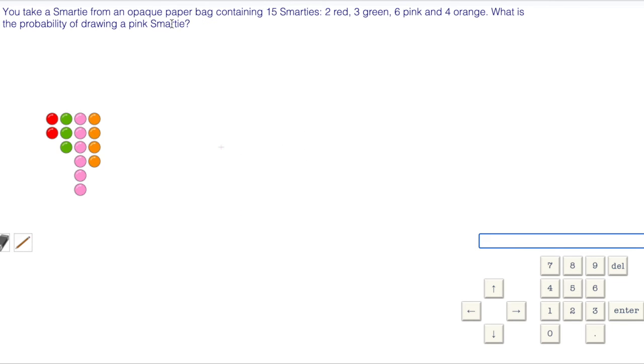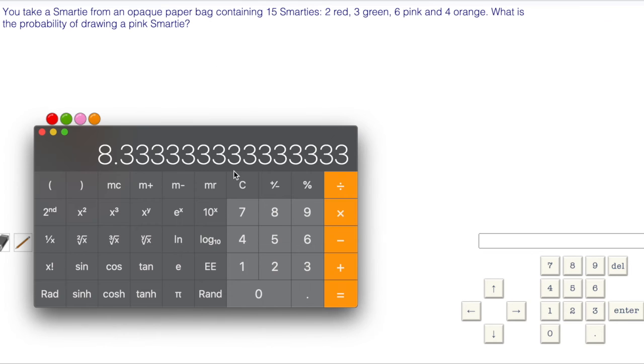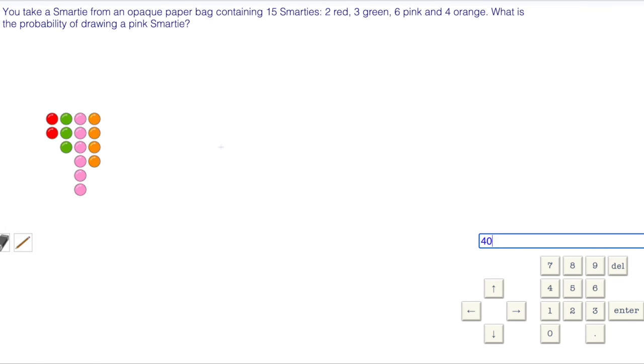What is the probability of drawing a pink smartie? Six out of 15. As a decimal, that's six out of 15, which is going to be 0.4, which is a 40% probability.